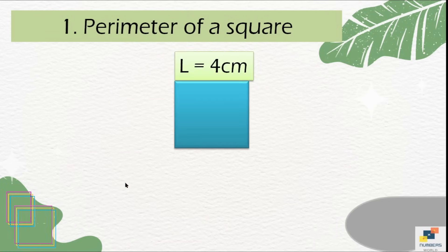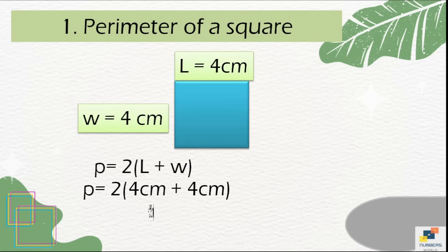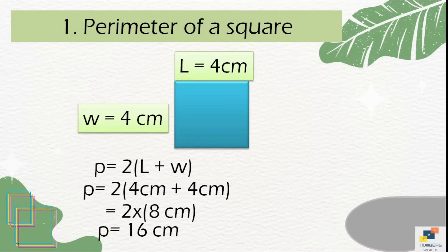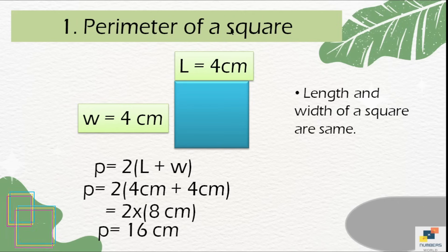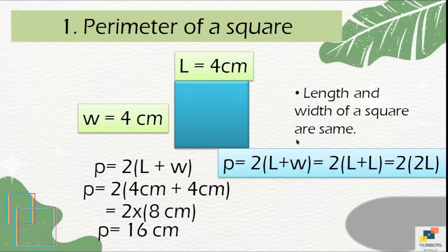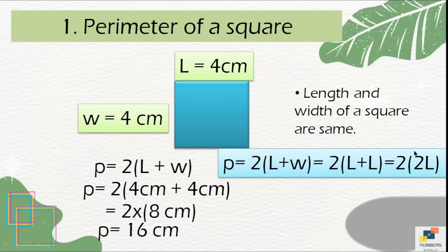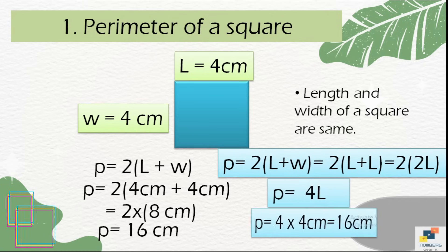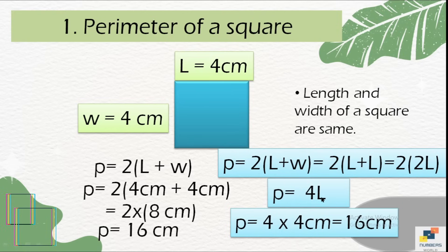For the perimeter of a square, length and width are both given. Write the formula and find the answer. Alternatively, since length and width are the same, replace w with l, giving l + l + l + l, which equals 2 × (l + l) = 4l. So perimeter of a square equals 4l. With l equal to 4 centimeters, the answer is 16 centimeters. It's your choice which method to use.